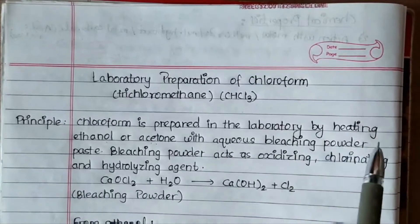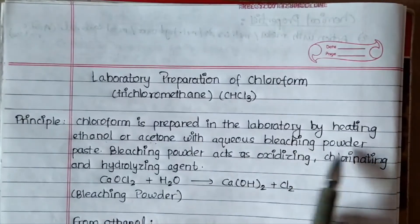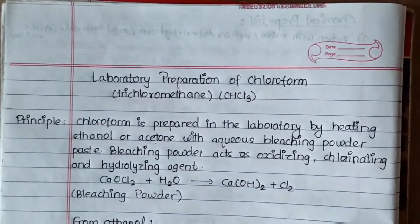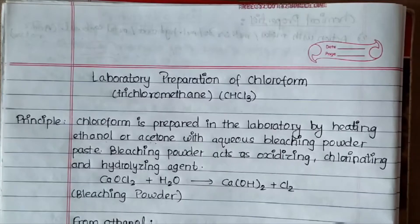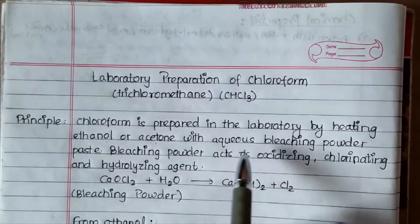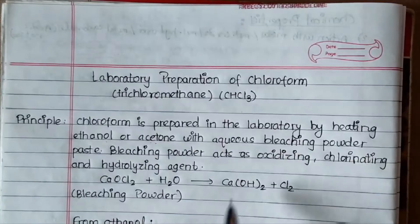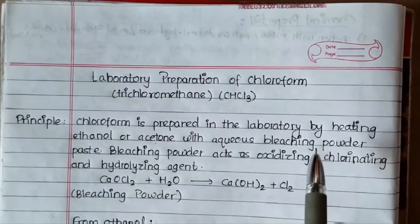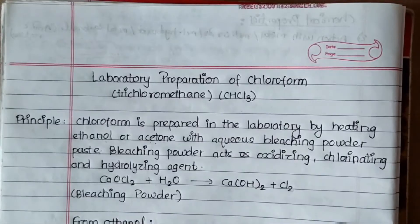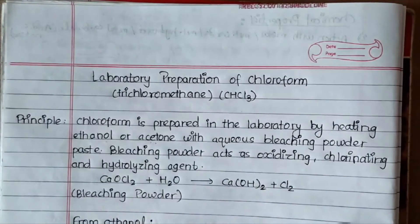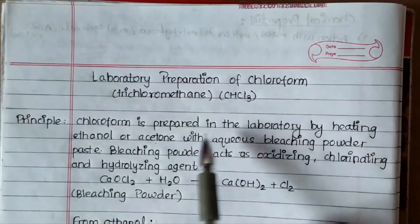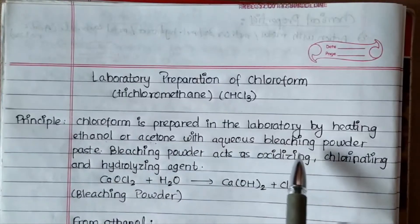Chloroform is prepared in the laboratory by heating ethanol or acetone with aqueous bleaching powder paste. There are two methods. It is heated with aqueous bleaching powder paste, and bleaching powder acts as an oxidizing, chlorinating, and hydrolyzing agent.